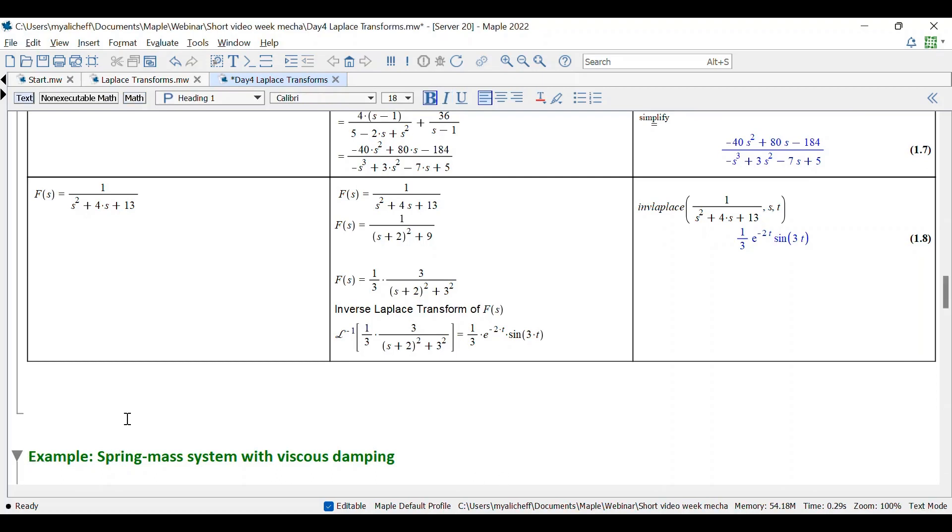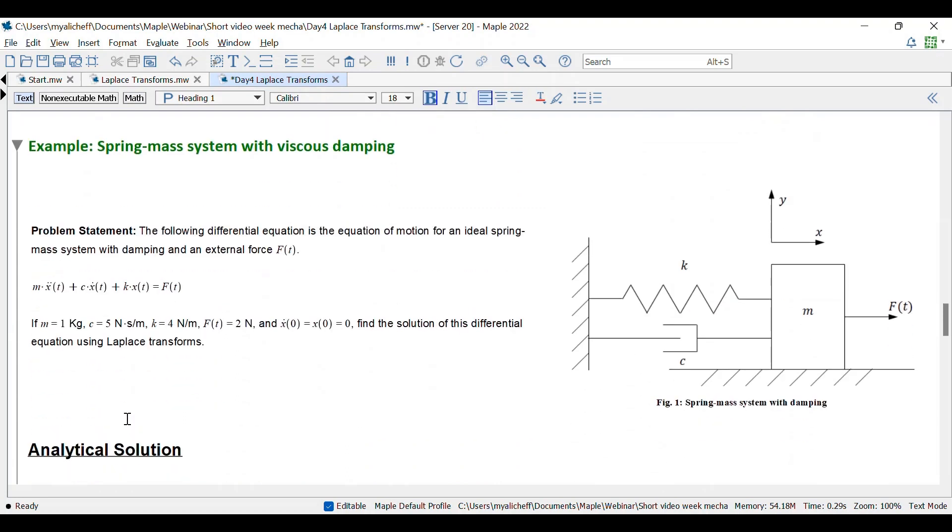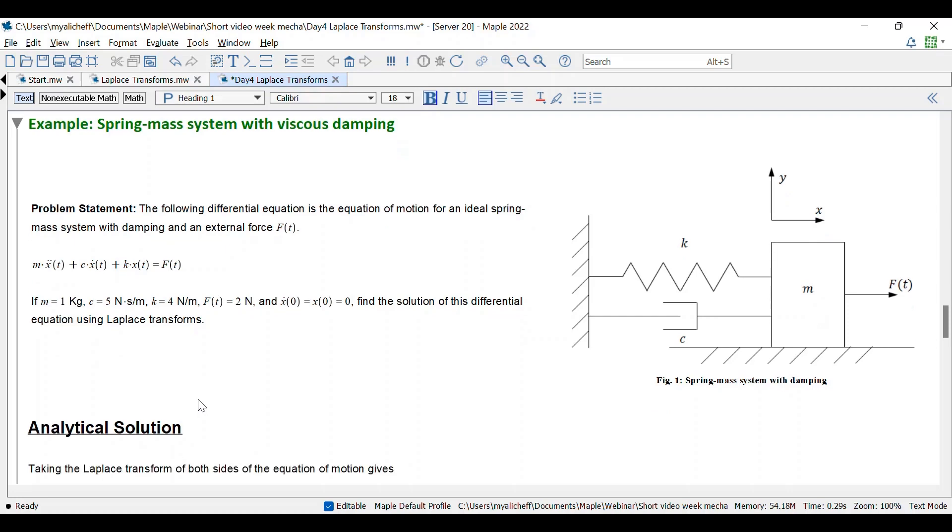So in this example, we will have this system here. So we have a differential equation that's describing the system for a spring mass system with damping. And we have an external force as well. We know some of the parameters here and we want to use the Laplace transform to find the solution of this differential equation. So we'll first do an analytical solution manually. Then we'll use Maple to solve it. And then we'll have a look at what we get in MapleSim.